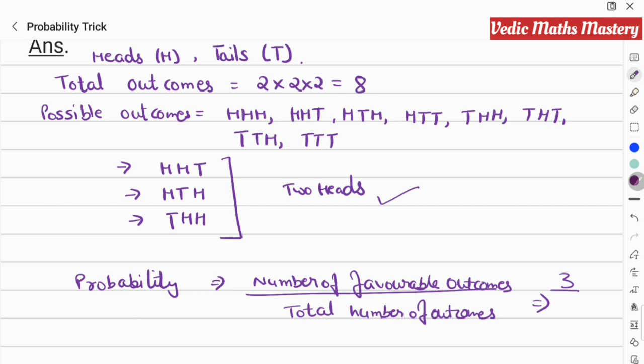So the probability of getting exactly two heads when a coin is tossed three times is three upon eight — that is the answer.